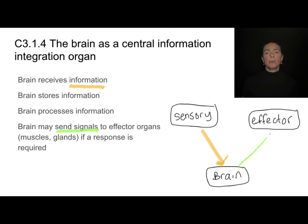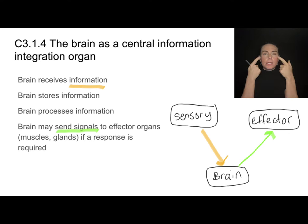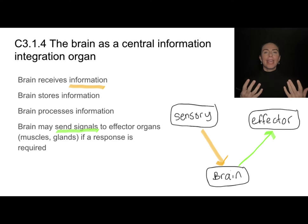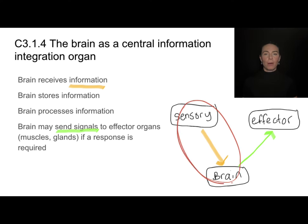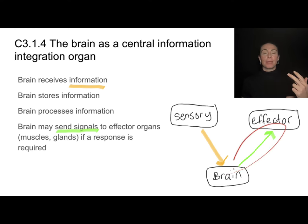Effector organs could be a muscle — so the brain might tell the muscles of the hand to get away from the heat. Or it could be a gland, like producing tears from tear ducts or sweat from sweat glands. The brain takes all information from our sensory organs, processes, prioritizes, and stores it, then sends messages to effector organs if a response is required.